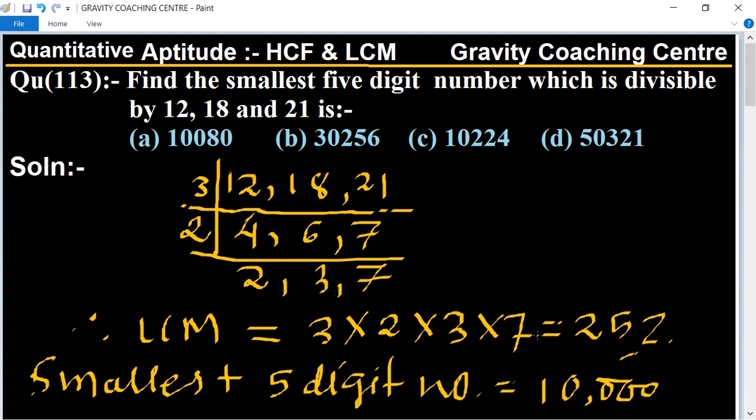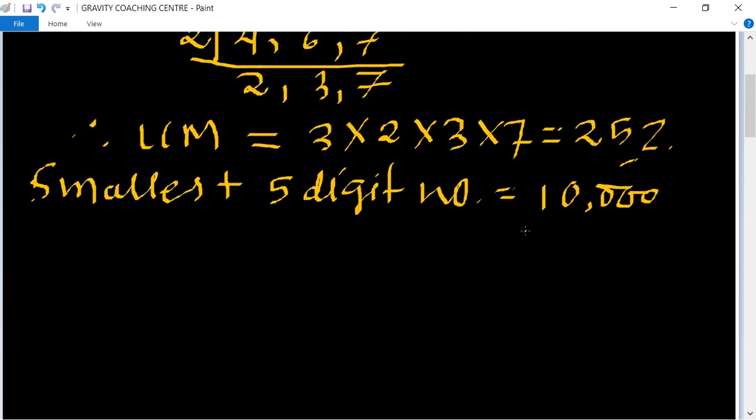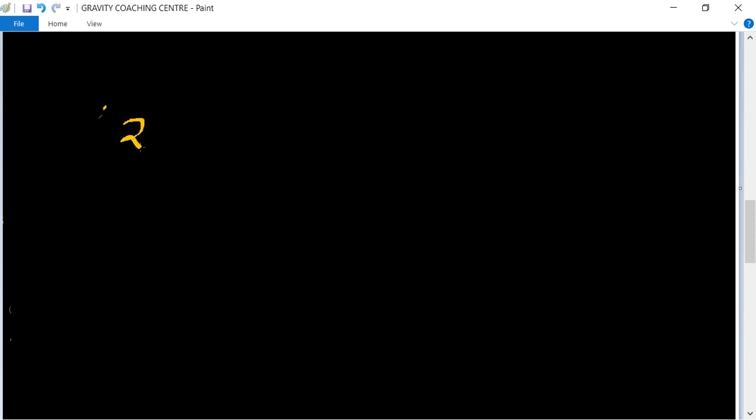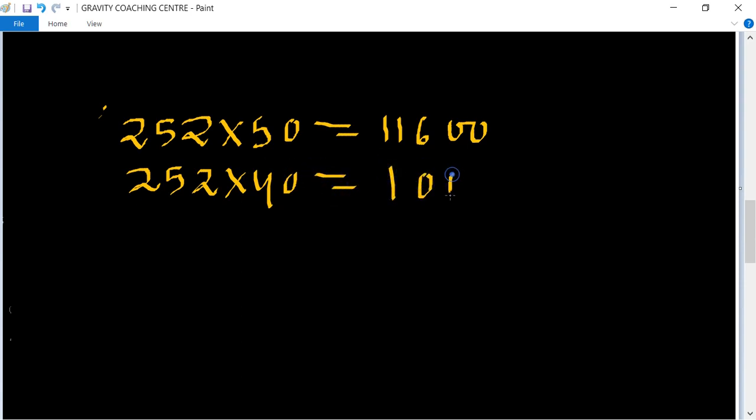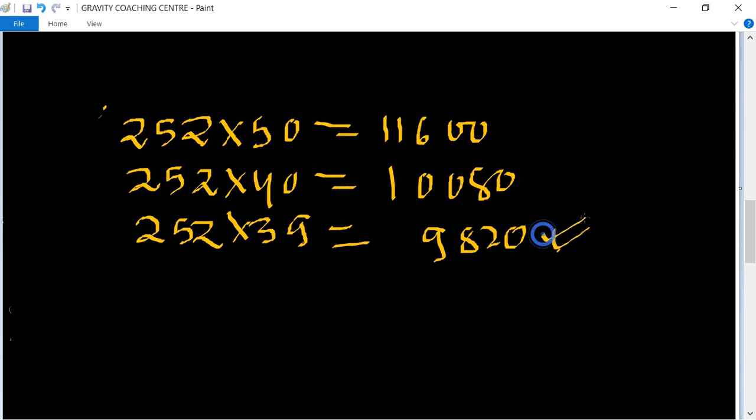We need to find the smallest 5-digit number which is a multiple of 252. 252 times 50 equals 11,600. 252 times 40 equals 10,080. 252 times 39 equals 9,828, which is not a 5-digit number. So the smallest 5-digit number is 10,080.